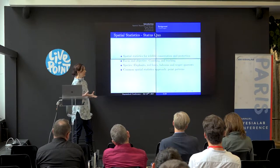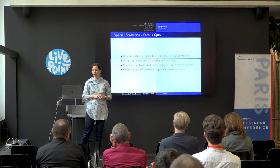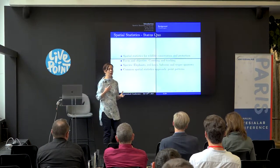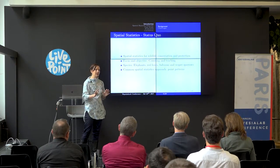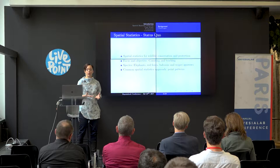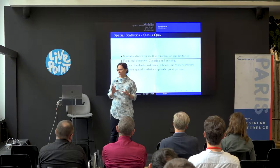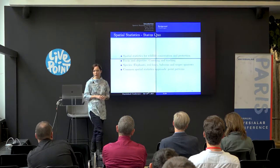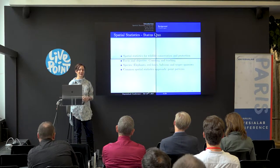The status quo when it comes to spatial statistics currently — if you look at what people do in that field — is that they focus on counting and tracking. They try to count in order to look at wildlife species distributions and also to track animals for animal behavior. The common spatial statistics approach is point patterns, and because of the rhino poaching situation I'll tell you more about, we just couldn't follow this typical approach.